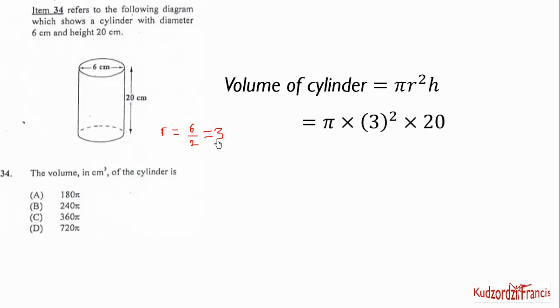So we substitute 3 here and 20 here, which is the height. So that will give us 3 squared, which is 9. 9 times 20 is the same as 180. Multiply 9 by 2 to get 18, then by 10 to get 180π cm³. So the correct choice is A.